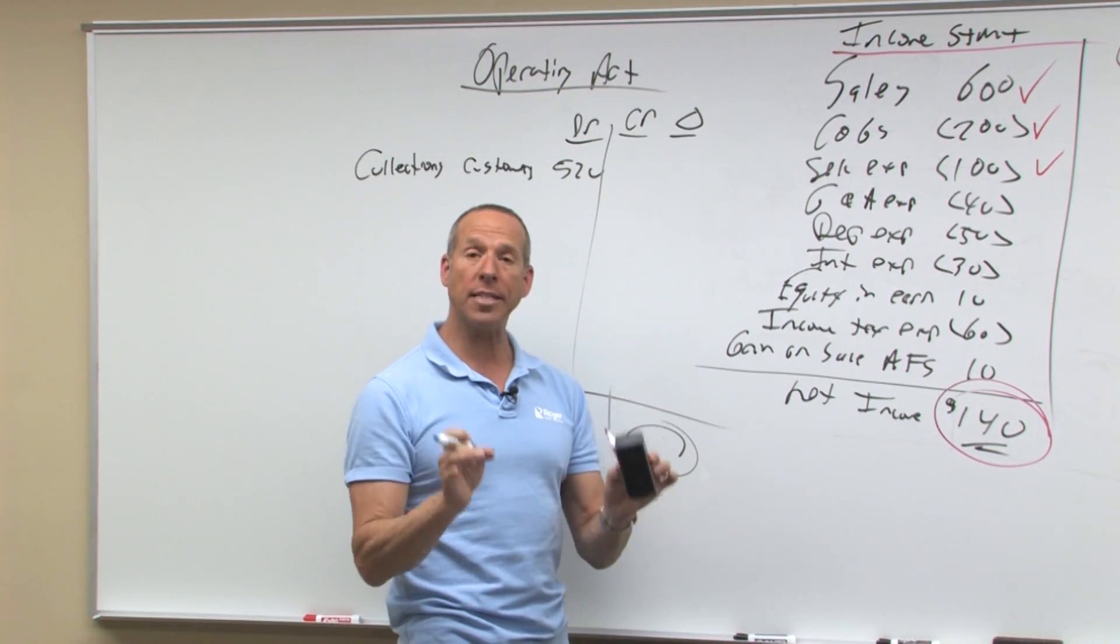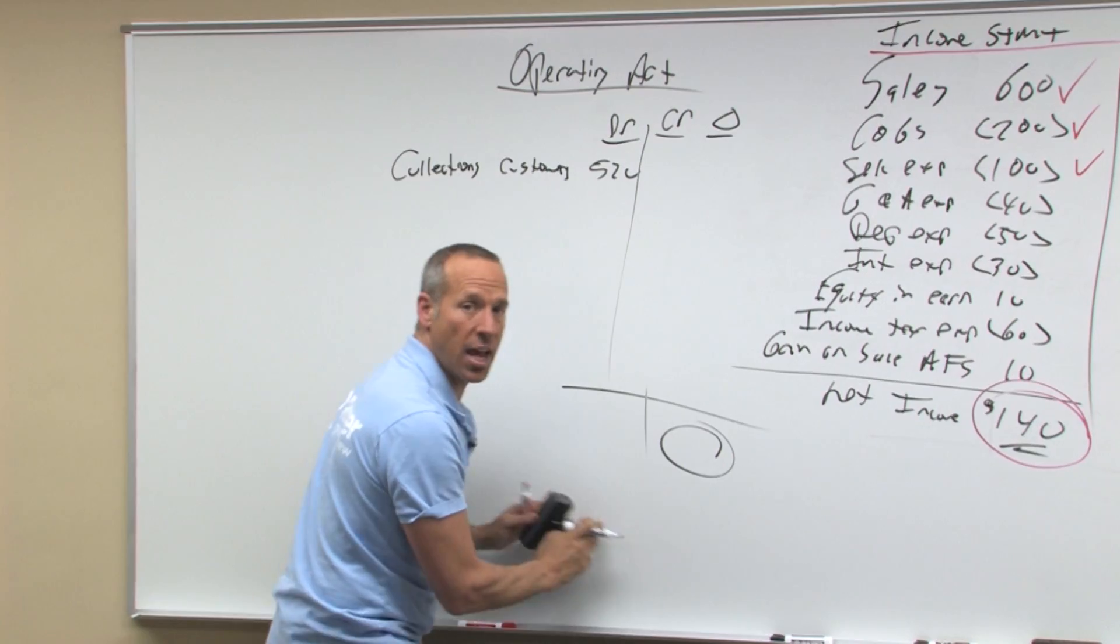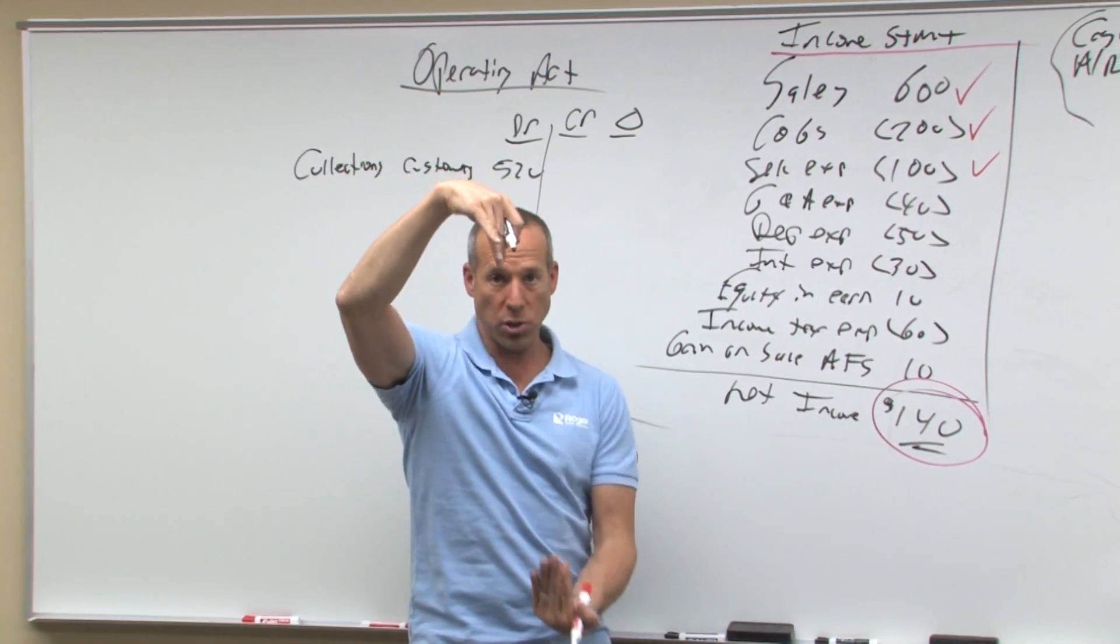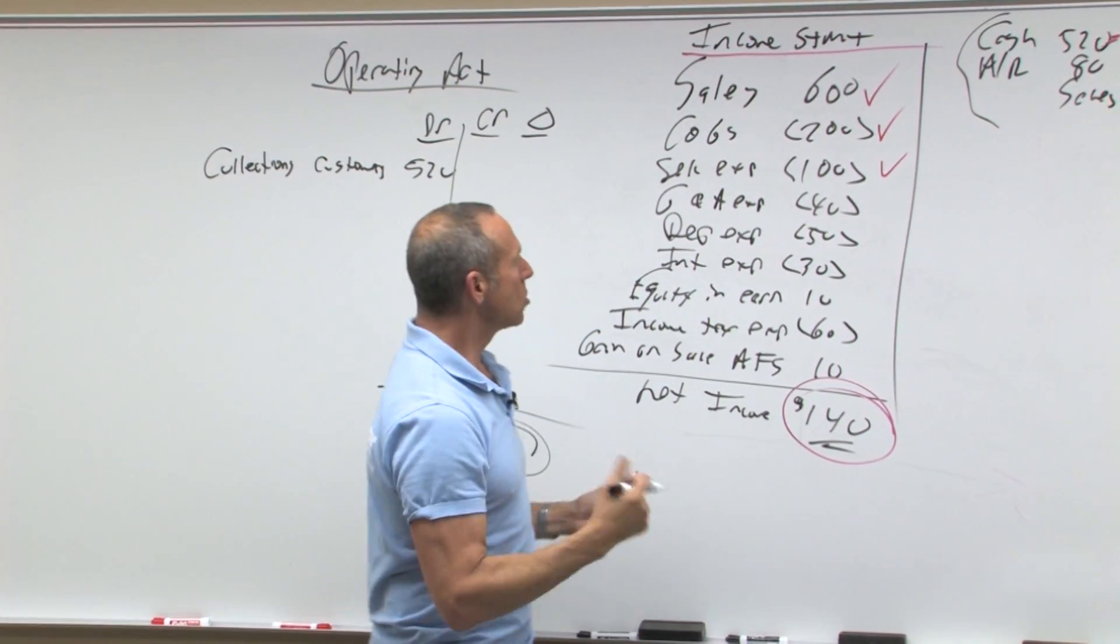Now realize that regardless of whether you use direct or indirect, investing are the same, financing are the same, all the numbers are still the same. It's just there's two different ways to get here. You can go this way or this way - where do you meet? Same number at that 135.